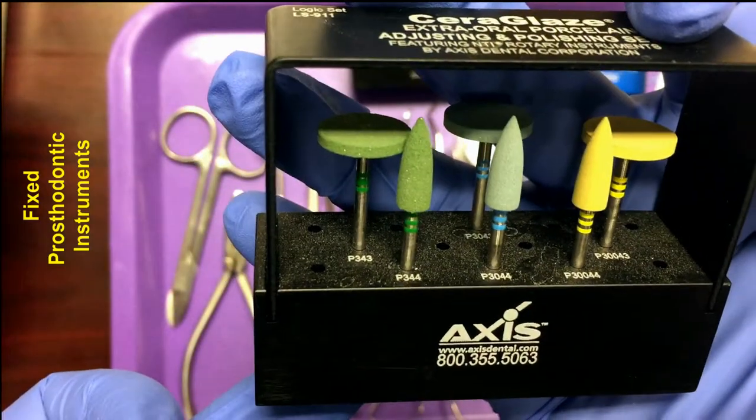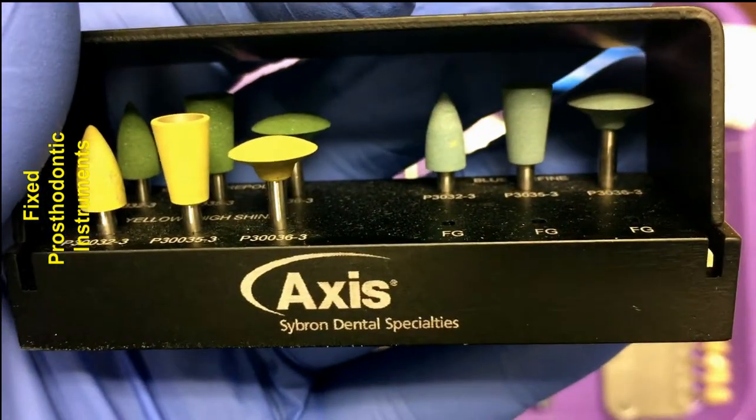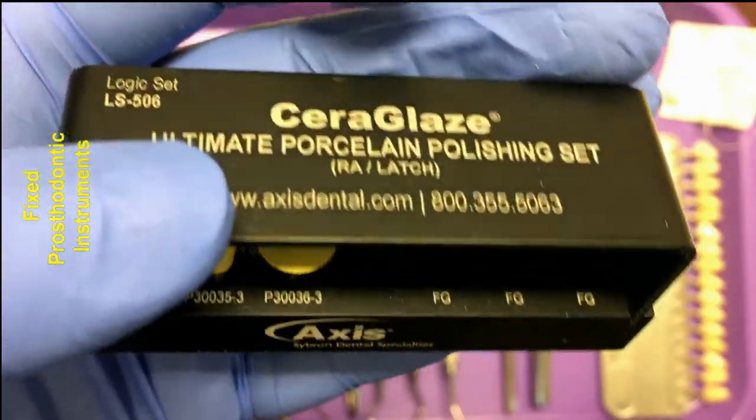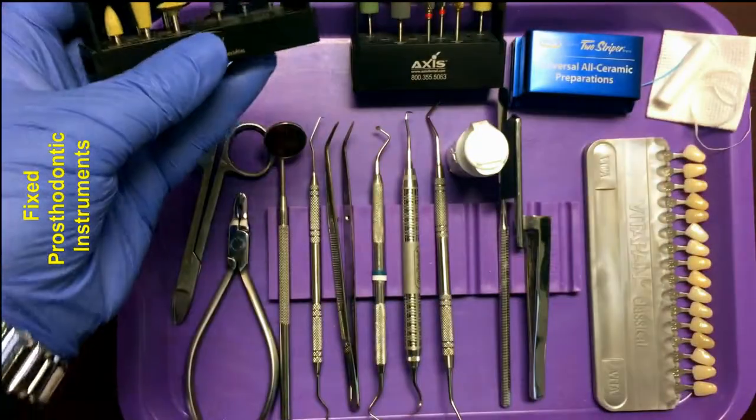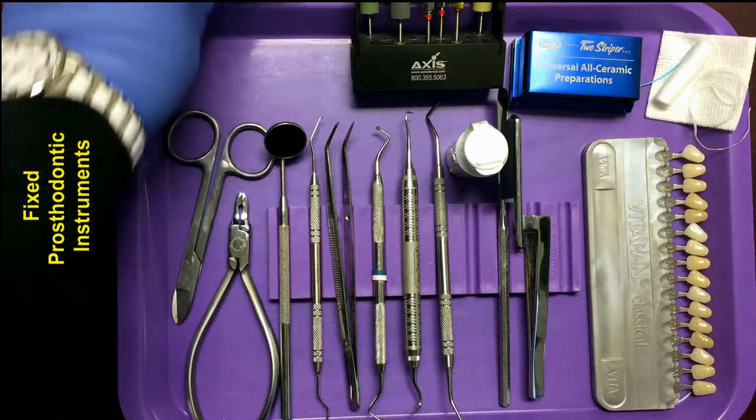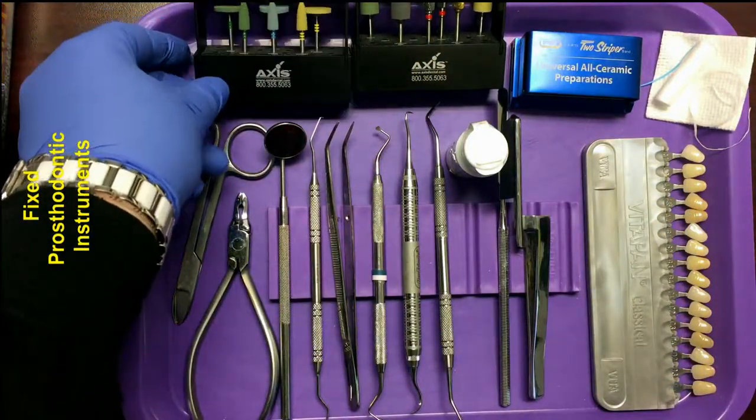As with any other restorative procedure, you're going to have paper products, such as your cotton rolls. They help to absorb moisture and keep the area dry and isolated, limited isolation. Gauze can be used for the same purpose. It can also be used to wipe off your spatula after you've mixed cement.